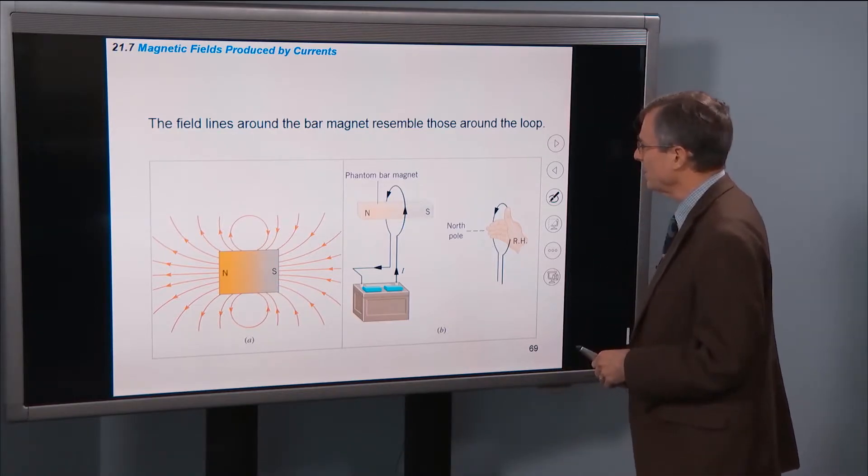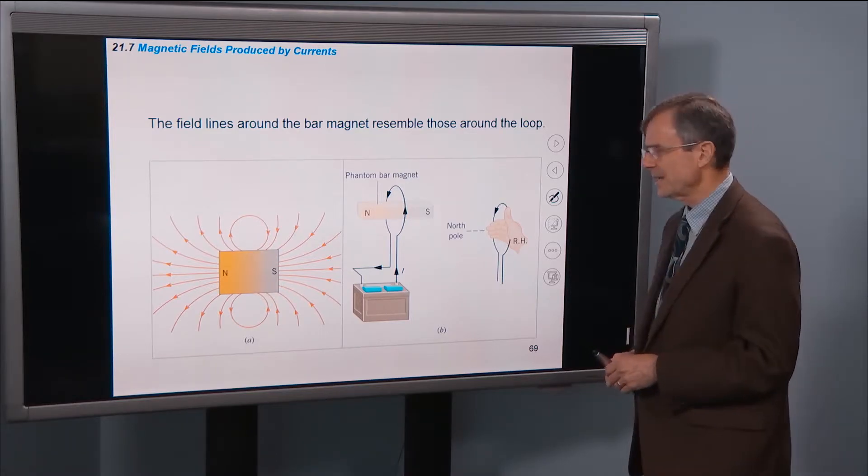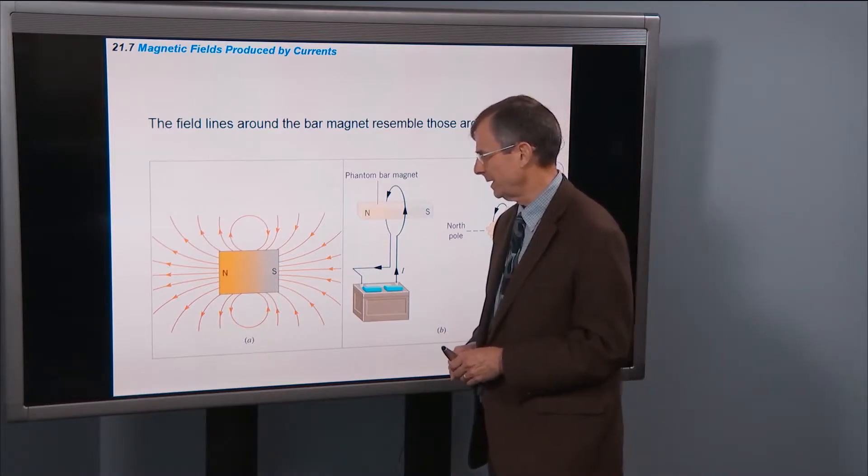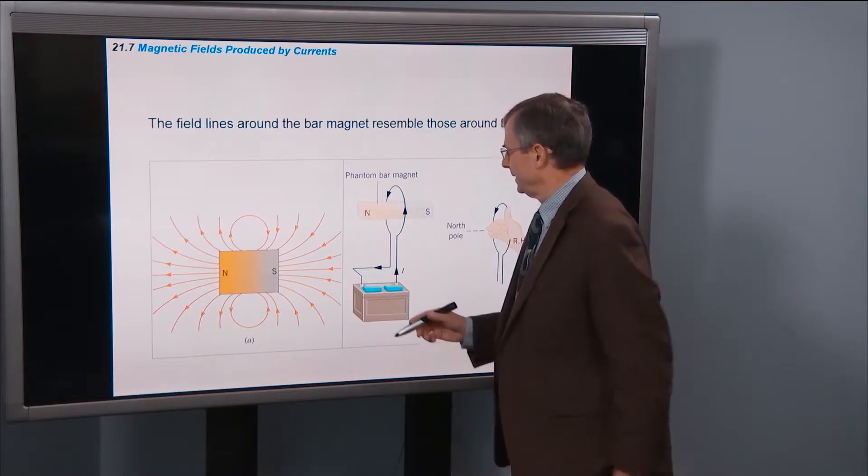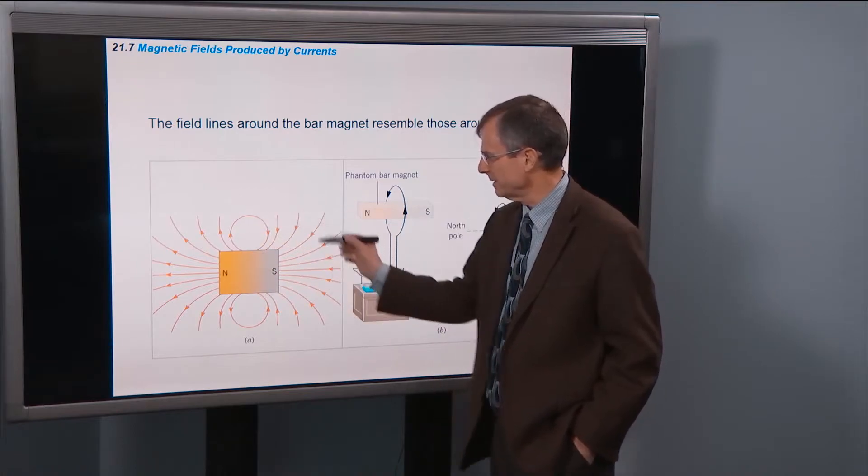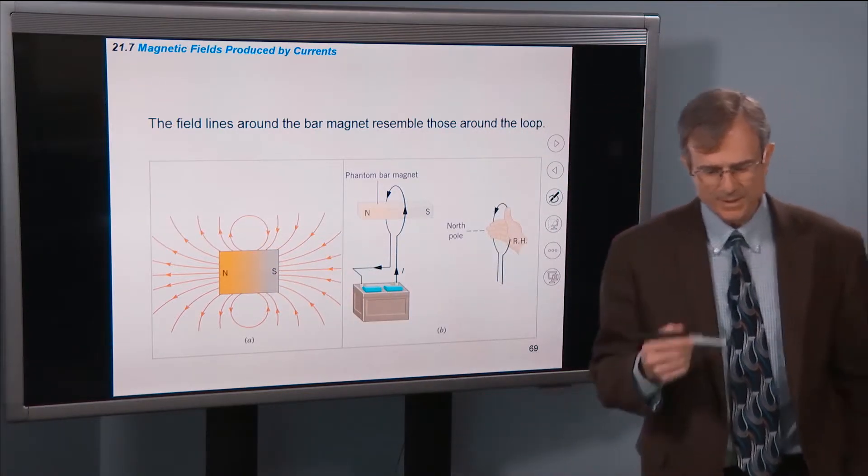Lines around the bar magnet resemble those around the loop. And in fact that's kind of a hint as to how things work here. This wire loop produces a magnetic field that looks like this. And it looks like a bar magnet. And that's a hint.